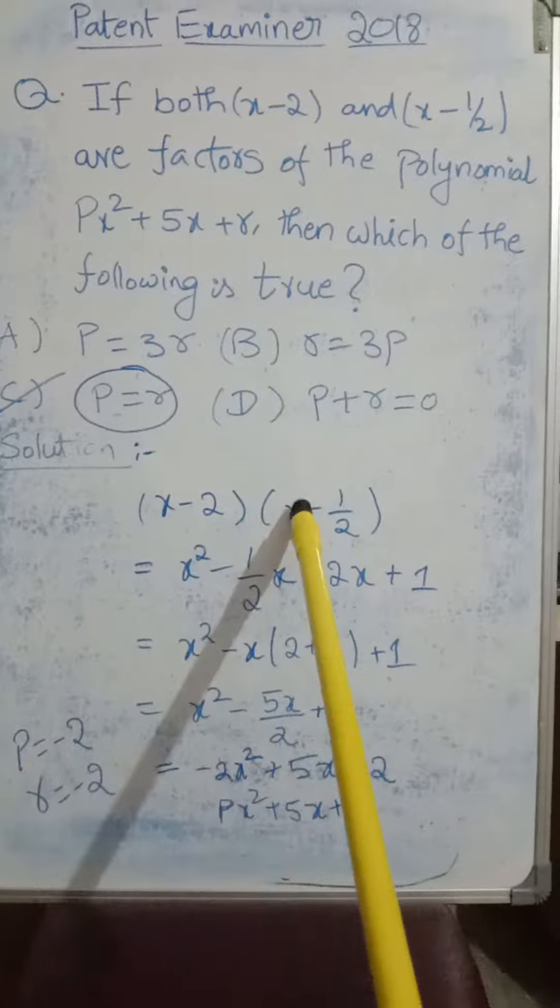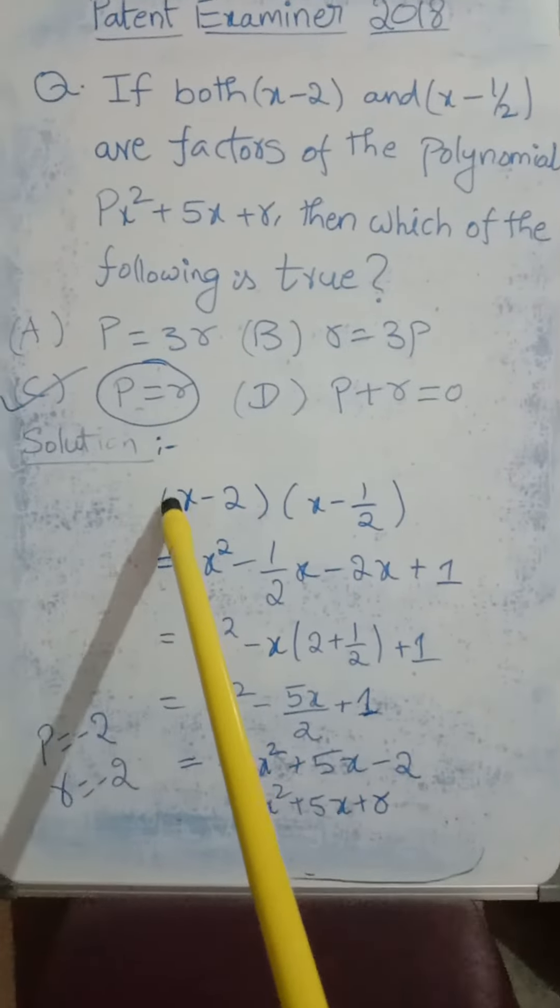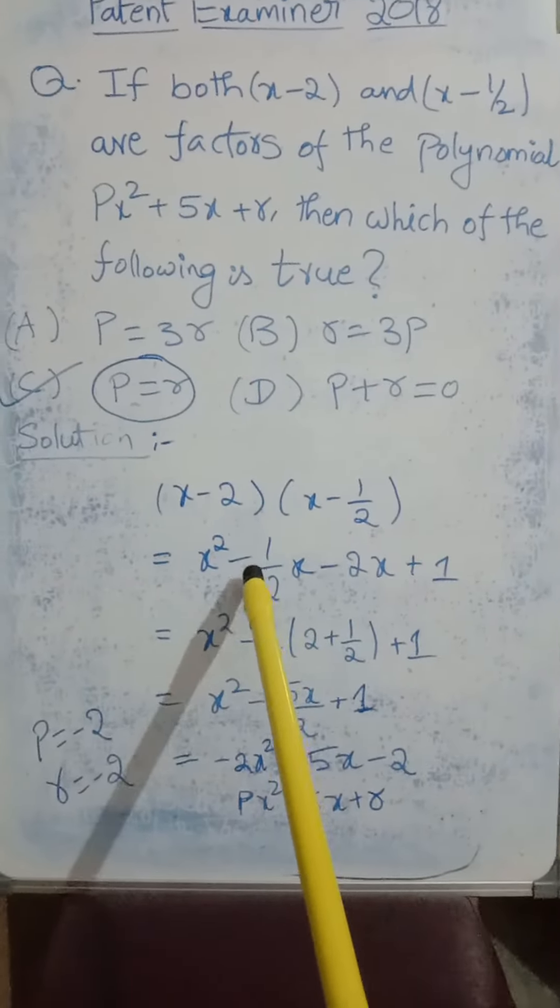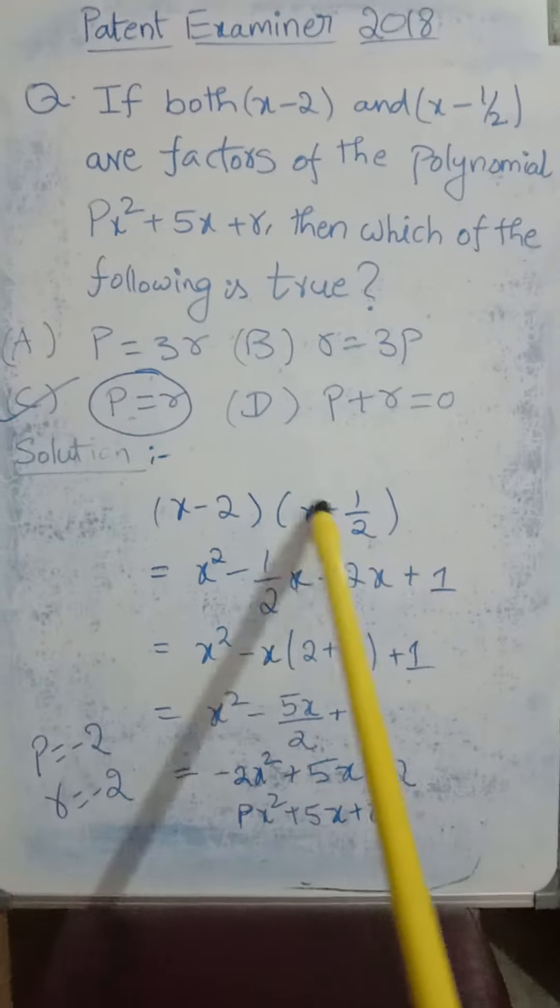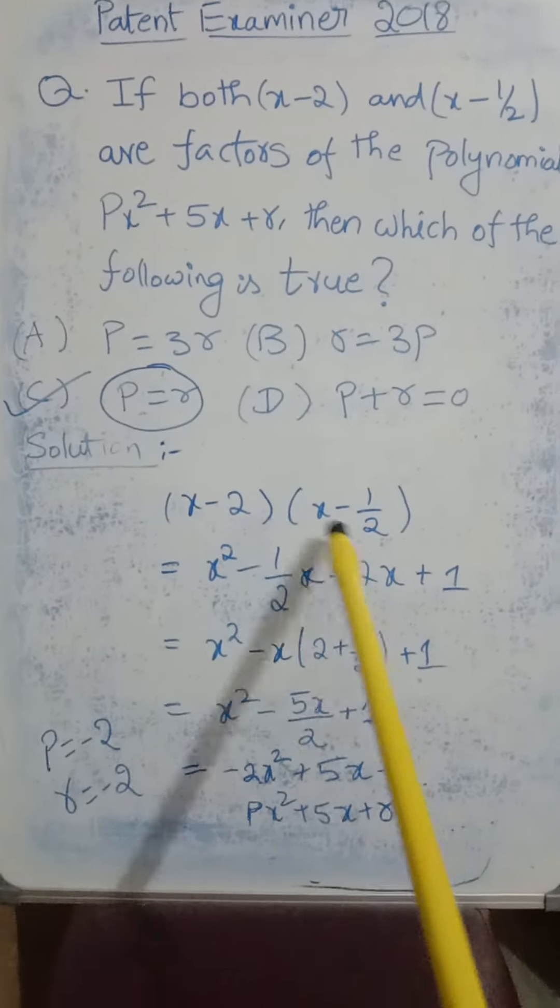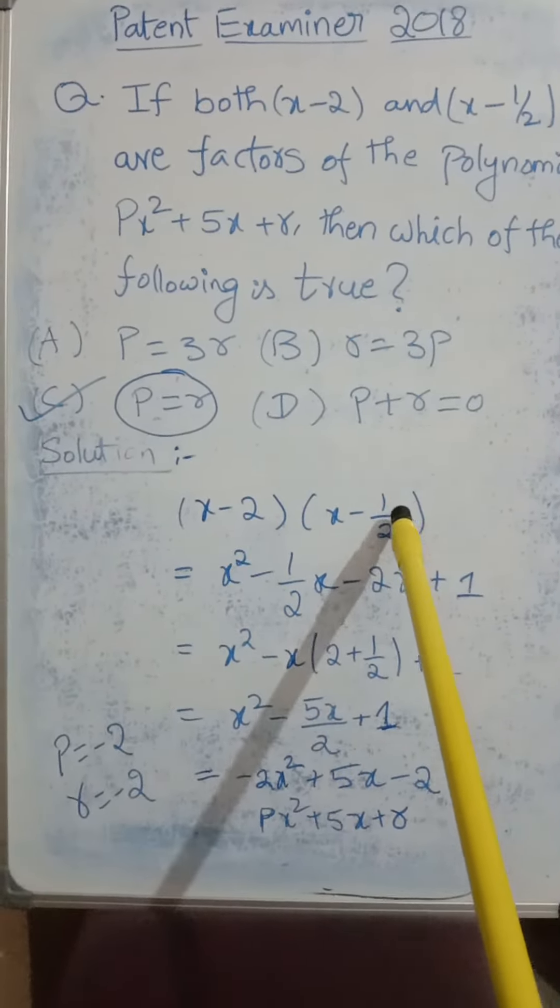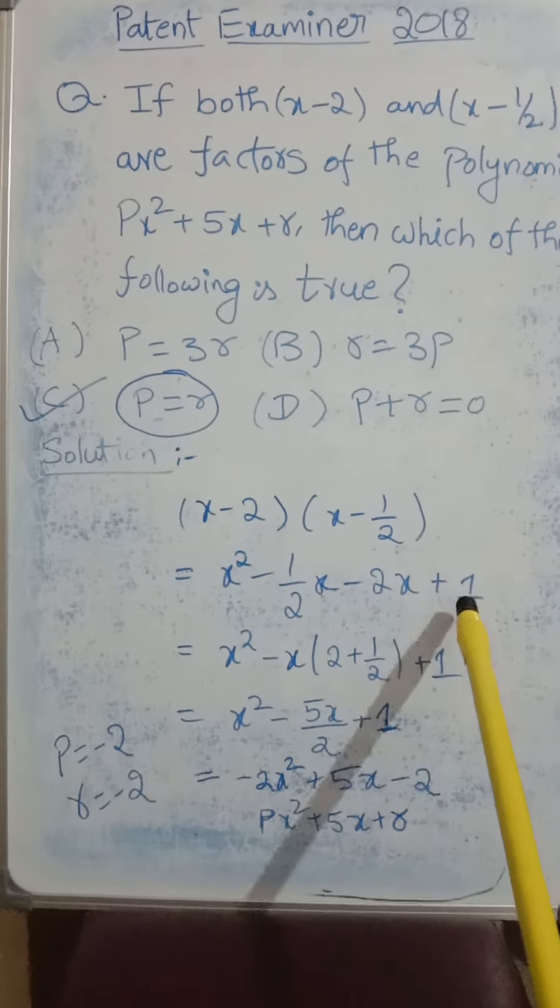So x into x is x square, x into minus half is minus half x, minus 2 into x is minus 2x, minus 2 into minus 1 by 2 is plus 1.